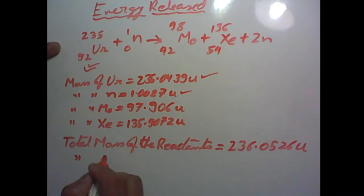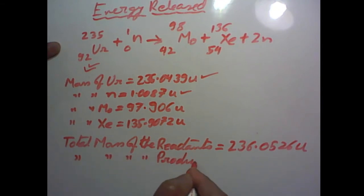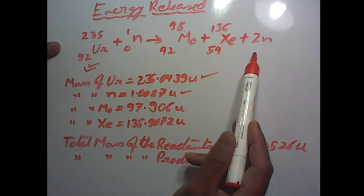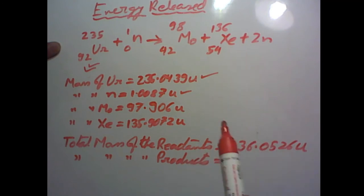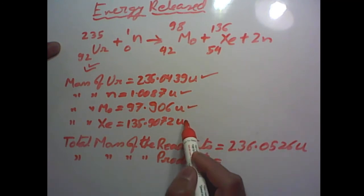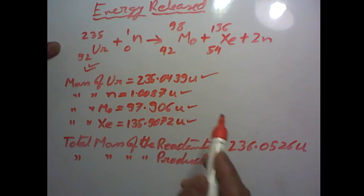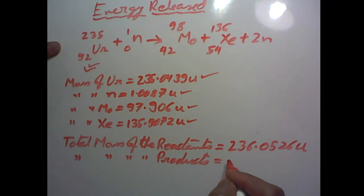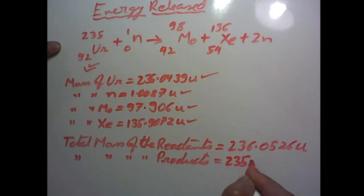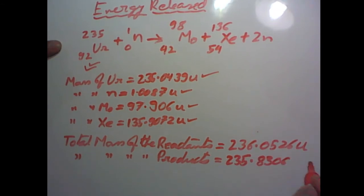Similarly, we need to find the total mass of the products in this fission process. The products are the molybdenum nucleus, the xenon nucleus, and two neutrons. Adding these together — molybdenum plus xenon plus two times the mass of a neutron — the total mass of the products comes to around 235.8306 U.